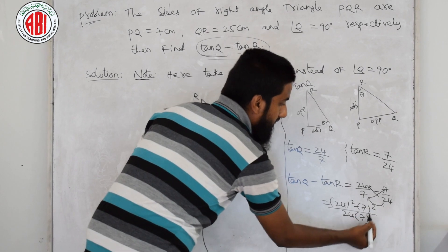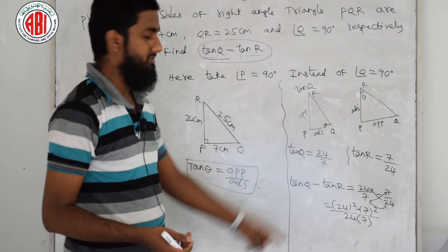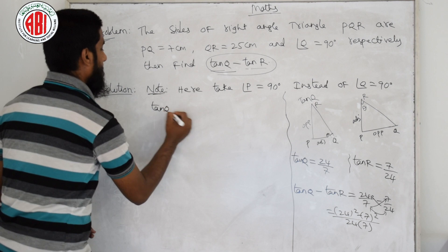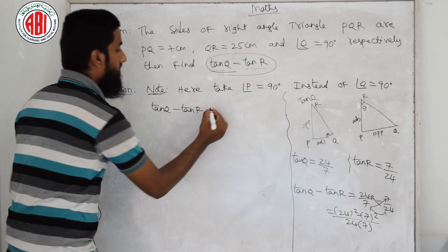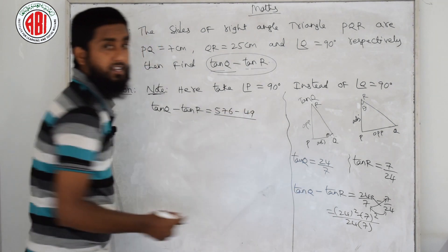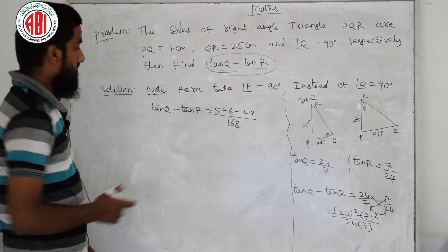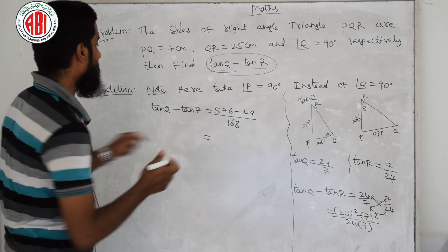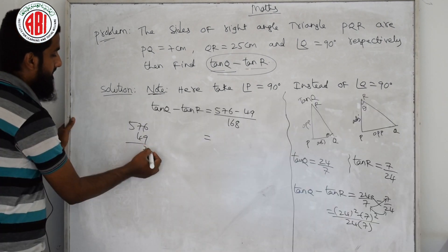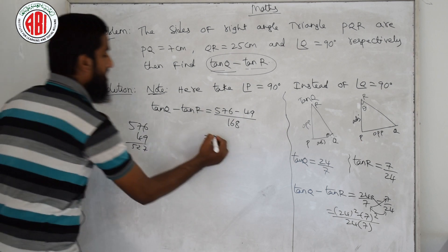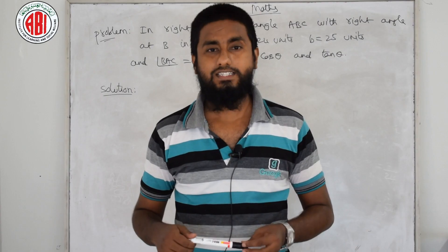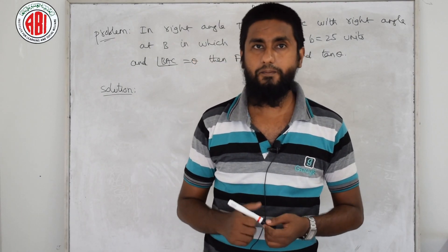Tan Q minus tan R equals 24 squared minus 7 squared over 7 times 24, which equals 576 minus 49 over 168. That gives 527 over 168. So our answer is 527 by 168. This is exercise 11.1, problem number 2.